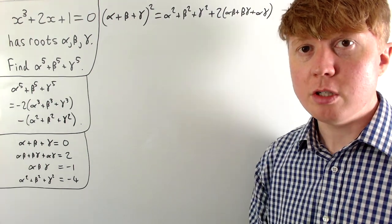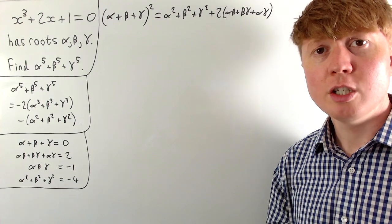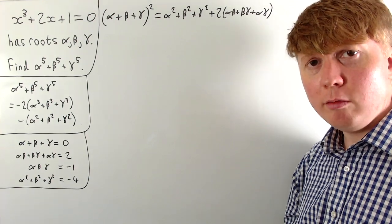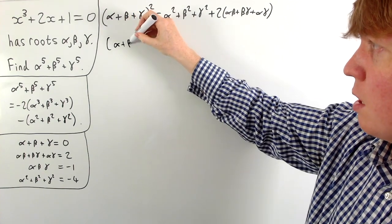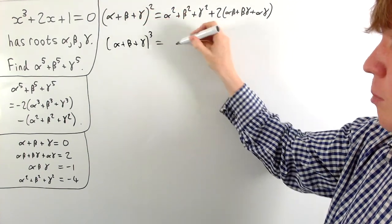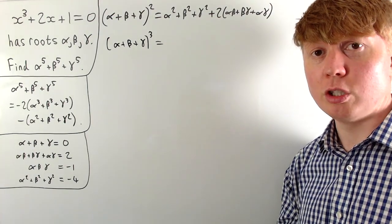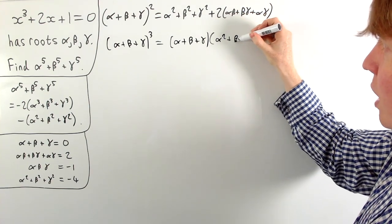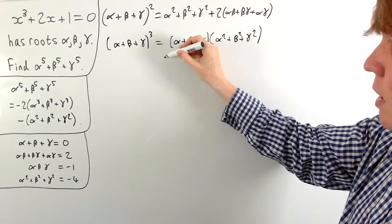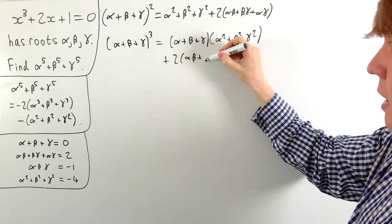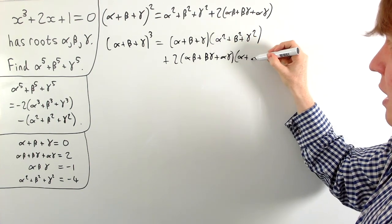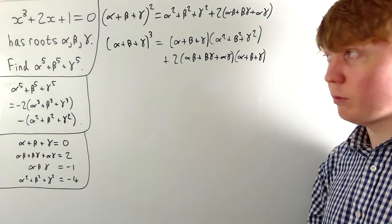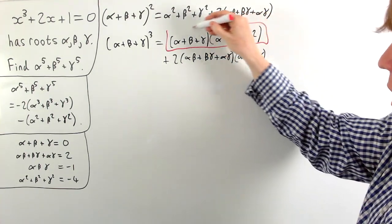For the sum of cubes, we start from the squared identity and multiply both sides by alpha plus beta plus gamma. On the left we get alpha plus beta plus gamma all cubed. On the right we group it as alpha plus beta plus gamma times the sum of squares, plus two times the sum of pairs times alpha plus beta plus gamma.